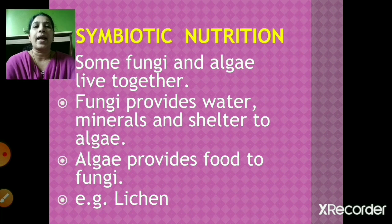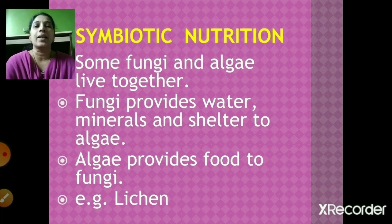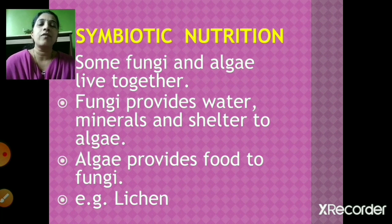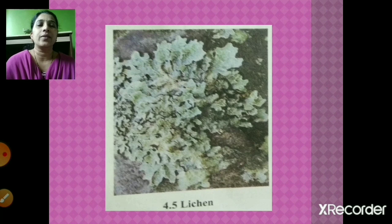Another example: some fungi and algae live together. Fungi provides water, minerals and shelter to the algae, and algae provides food to the fungi. Both help each other and fulfill their needs. The example of symbiotic nutrition is lichen, which represents a good symbiotic relationship between algae and fungi.